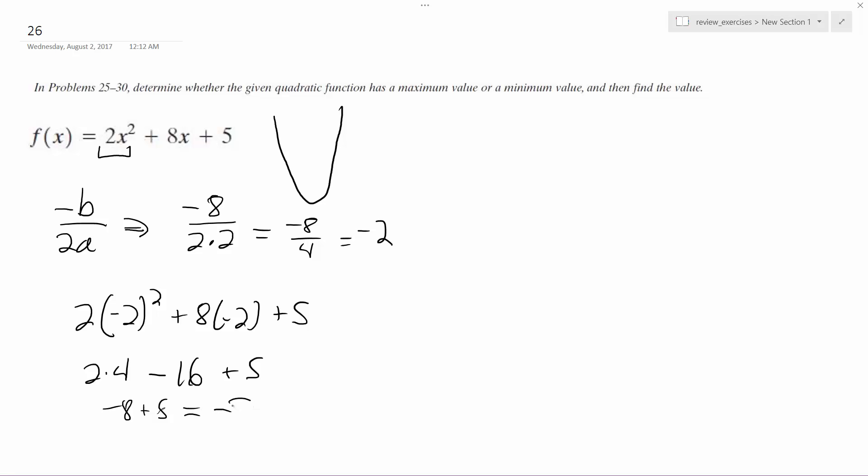So it's just negative 3. So, minimum value is x, well actually is y equals negative 3 when x equals negative 2.